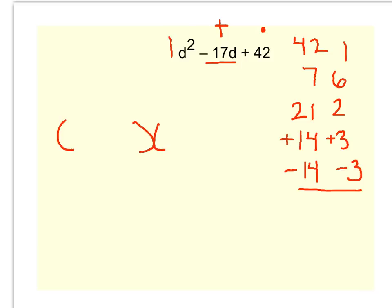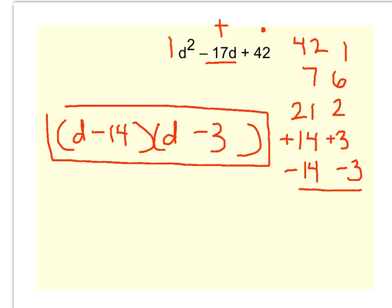So make your parentheses. The d squared becomes d and d, and you can put a negative 14 and a negative 3 in the slots. Remember, it'd be okay if you reversed these. So this would be your factored answer.